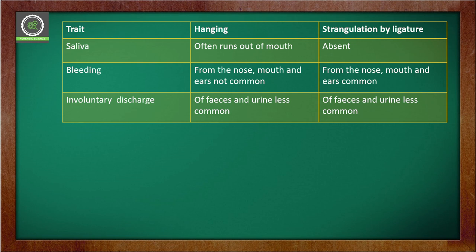The thirteenth trait is saliva: in case of hanging, saliva runs out of the mouth, whereas in ligature strangulation saliva is completely absent. The fourteenth trait is bleeding: in hanging, bleeding from the nose, mouth, and ears may be seen but is not common, while in ligature strangulation bleeding from the nose, mouth, and ears is very common.